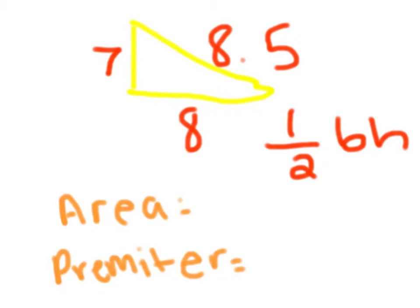I'm going to find out the area and perimeter of this triangle. The area — you have to do one half times b times h, where b and h are base and height.